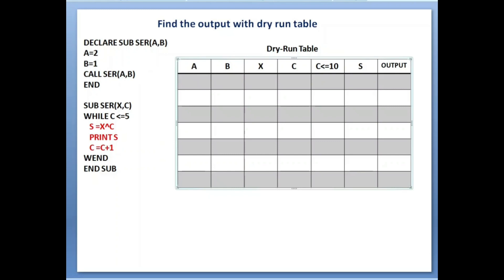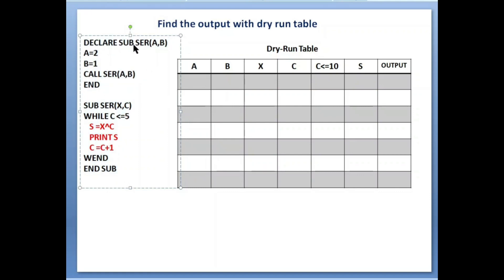Hello guys, welcome to my channel. Today in this video I will explain the easiest way to find the output of a given program in QBasic. This is an important question in exams for two marks, so you need to make a dry run table and display the output of the program. The program will be given to you in the exam, and we need to show the steps in the dry run table and display the output finally.